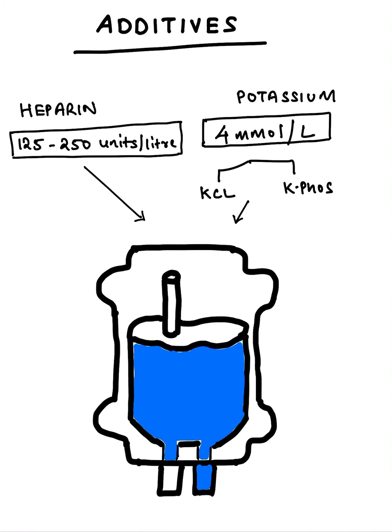After deciding on our PD fluid concentrations, we need to add some additives. The additives we add are heparin and potassium. Heparin is mainly added to prevent formation of fibrin clots, thus preventing blockages of our PD catheter. We add 125 to 250 units per litre of heparin. For potassium, we do not add it immediately — we add it only after 10 cycles of PD, because as PD progresses the serum potassium levels come down and we need to normalize those as well. We have two options: KCl and K-phos. If only potassium is low, we add KCl; if potassium and phosphorus are both low, we add K-phos — at 4 mmol per litre (4 mEq/L).